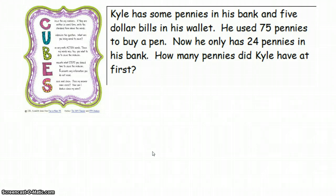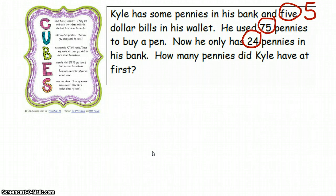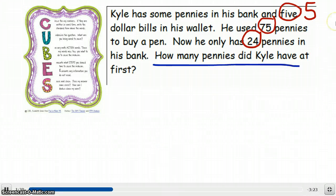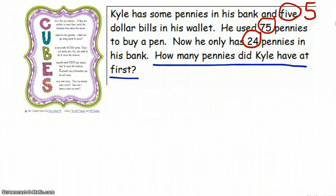Our first step is to circle the numbers. I see the number 5 — that's in word form, so I'm going to write it in standard form. I see the number 75 and the number 24. My next step says to underline the question: How many pennies did Kyle have at first?